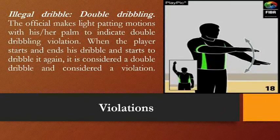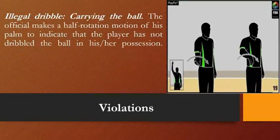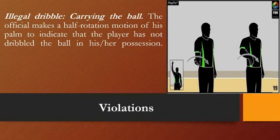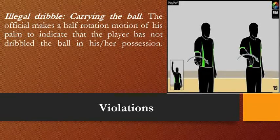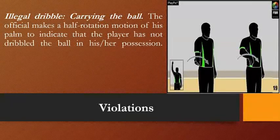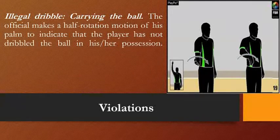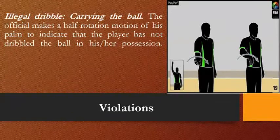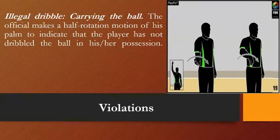Another kind of illegal dribble is carrying the ball — also called lifting or palming the ball. Because the player is using their palm instead of the fingers, the official makes a half-rotation motion of the palm to indicate that a player has carried the ball.